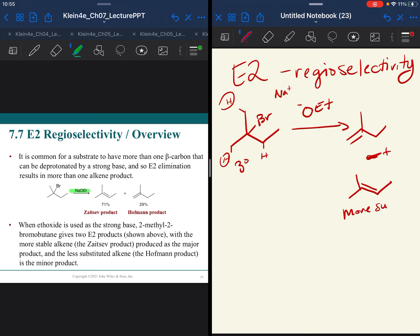So the more substituted alkene product is known as the Zaitsev product. You do need to know that term. The less substituted product is known as the Hofmann product. This is very important to know because you are always going to be asked to predict the major product.